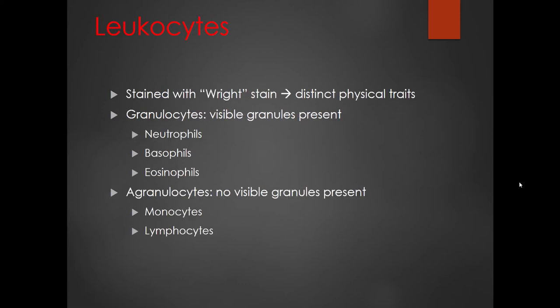Looking at leukocytes or white blood cells histologically, the stain most commonly used is the Wright stain. The Wright stain gives all the different leukocytes very distinctive coloration patterns, making it possible to differentiate between them. A key distinction is whether granules are visible or not. Granulocytic white blood cells — neutrophils, basophils, and eosinophils — have visible granules. Agranulocytic leukocytes — monocytes and lymphocytes — have no granules. We'll go through each of the five white blood cells so you can see what they look like and what they do.